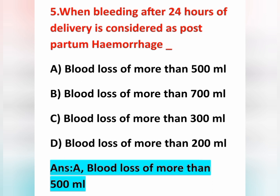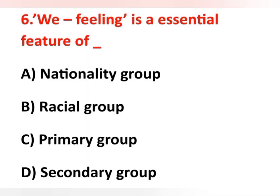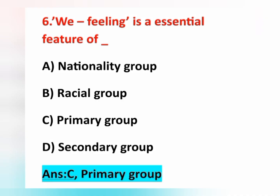Sixth question from sociology: 'We feeling' is an essential feature of — option A nationality group, option B racial group, option C primary group, option D secondary group. The correct answer is option C — primary group. Primary groups are smaller in size, limited to a small area, members are mostly blood relatives, and they have close, face-to-face, intimate, personal relationships.